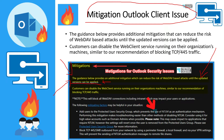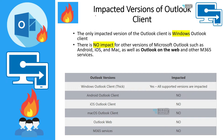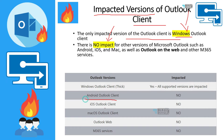If you want more details, pause the video and read the information, and I will provide the link in the description so you can check it out. In the next slide, we will look at impacted versions of Outlook client. All supported versions of the Windows Outlook client are impacted. There is no impact for other platforms such as Android, iOS, macOS, Outlook Web, or Microsoft 365 services — only the thick Windows clients are impacted.